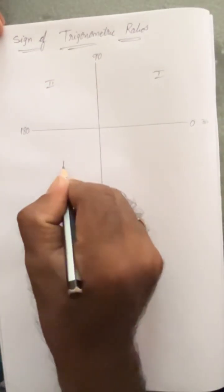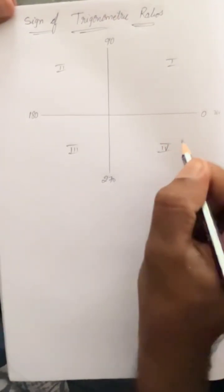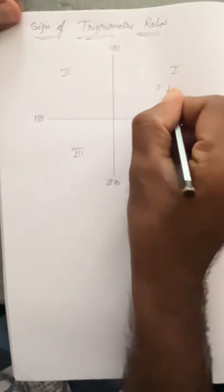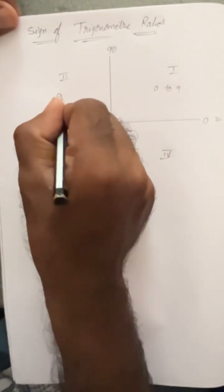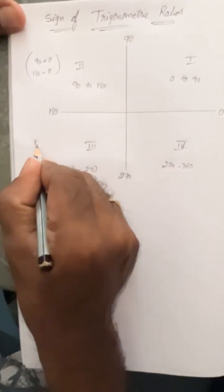For that, we are taking a Cartesian plane which is divided into 4 quadrants: quadrant 1, quadrant 2, quadrant 3, quadrant 4. First quadrant lies between 0 to 90, second quadrant 90 to 180, third quadrant 180 to 270, fourth quadrant 270 to 360.